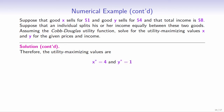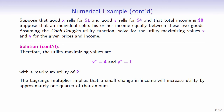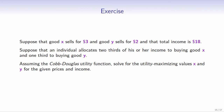Therefore, the utility-maximizing values are x equals 4 and y equals 1, with a maximum utility of 2. The Lagrange multiplier implies that a small change in income will increase utility by approximately one quarter of that amount. Here's an exercise you can try — make sure to pause the video before checking your solution. Good luck!